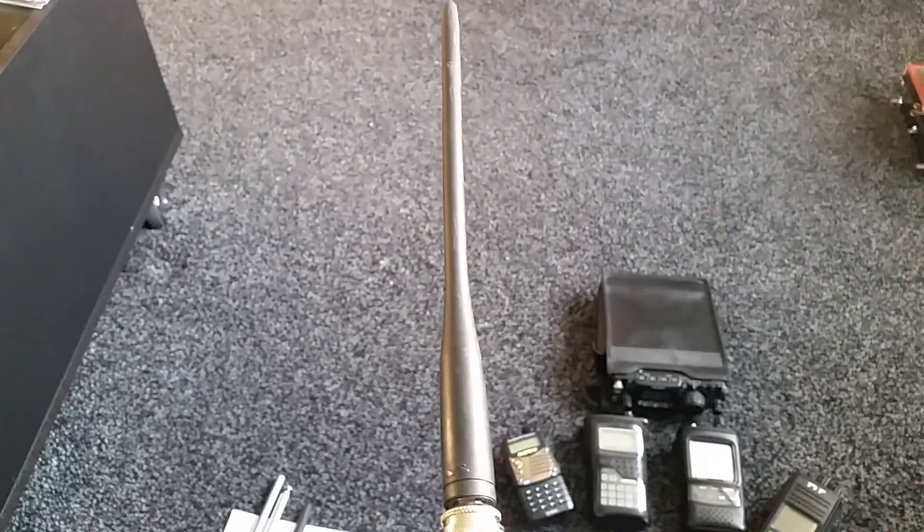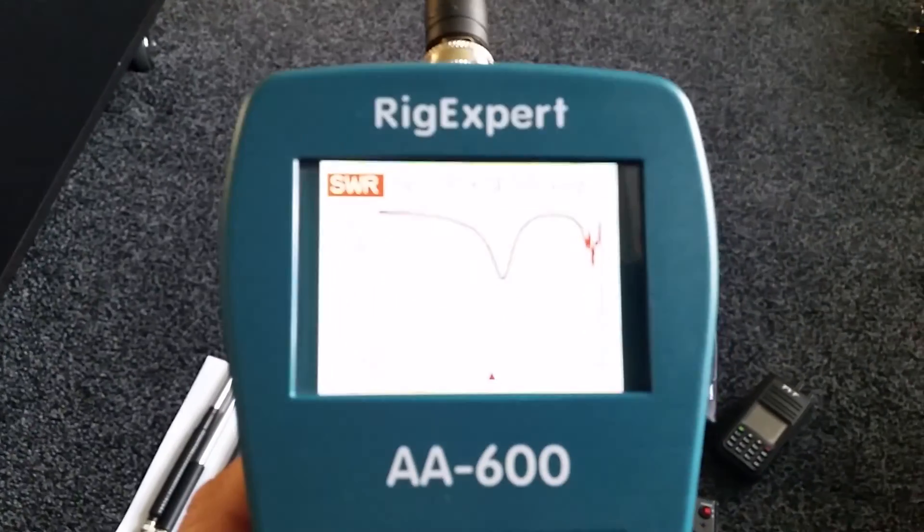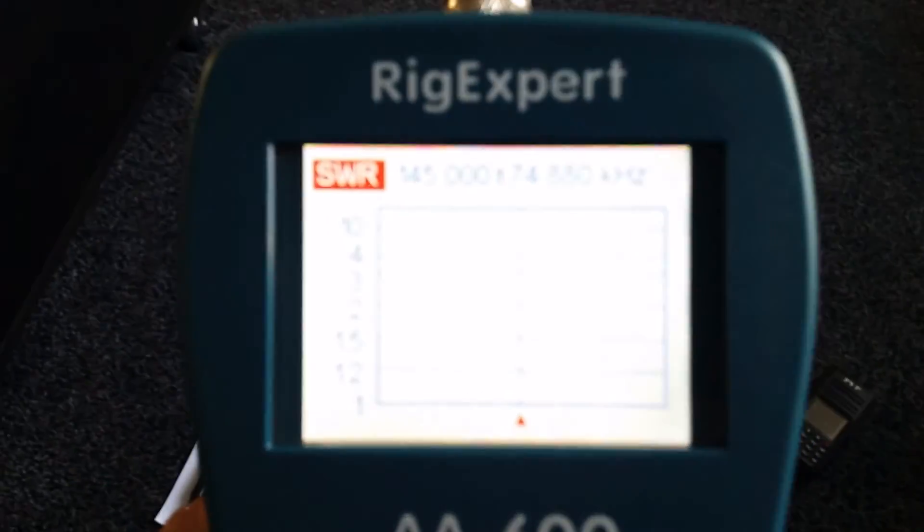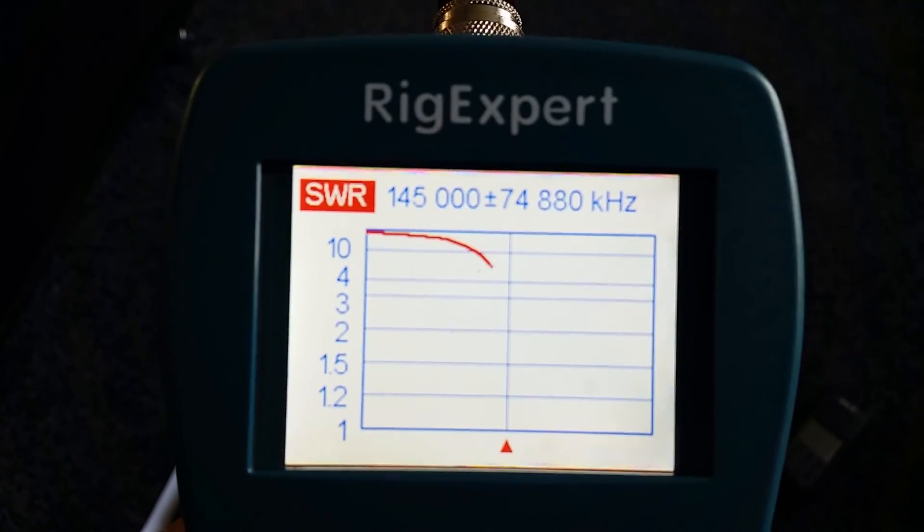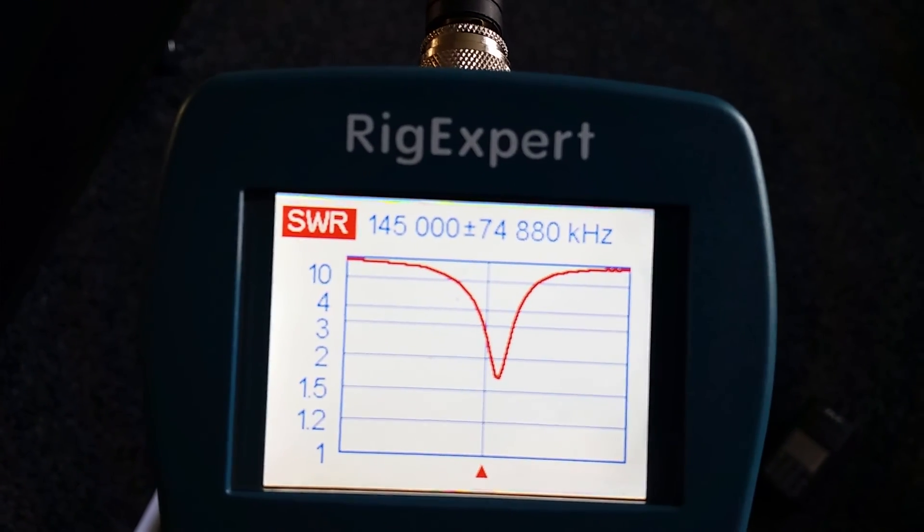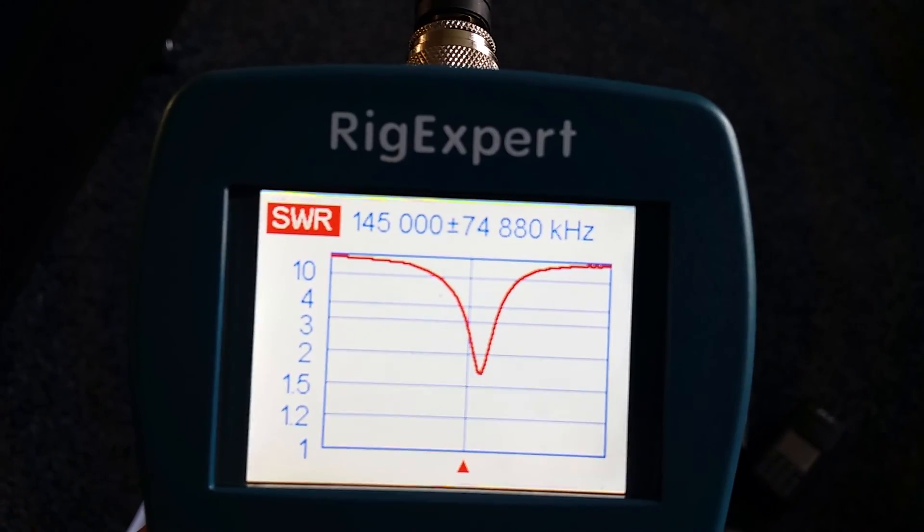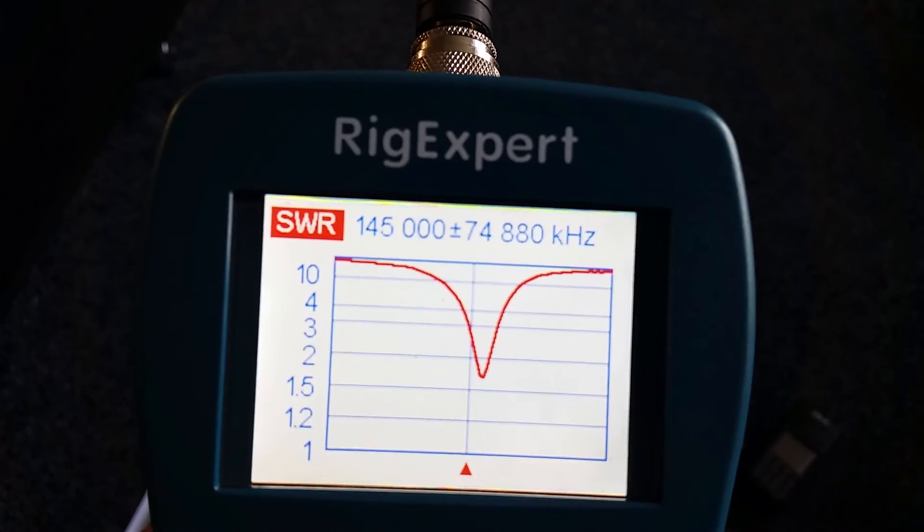Next is the 817 antenna without the extension. As you can see, it's not a million miles out, and it's about 1.6, 1.7.